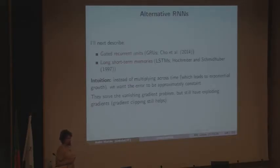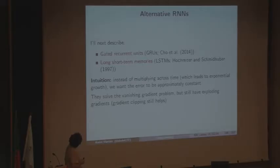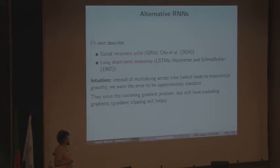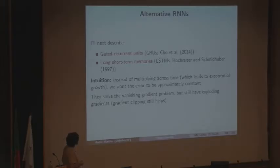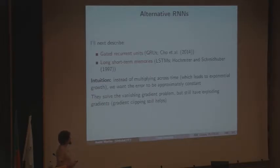Let's talk about alternatives to standard RNNs. I'll start with gated recurrent units and then long short-term memories. Even though LSTMs appeared before GRUs, GRUs are simpler to explain. Part of the problem with vanishing gradients comes from multiplying matrices across time, leading to exponential growth or decay. Instead, we want the error to be approximately constant. GRUs and LSTMs are designed to solve this problem — they solve the vanishing gradient problem but still have exploding gradients, so we still need clipping.